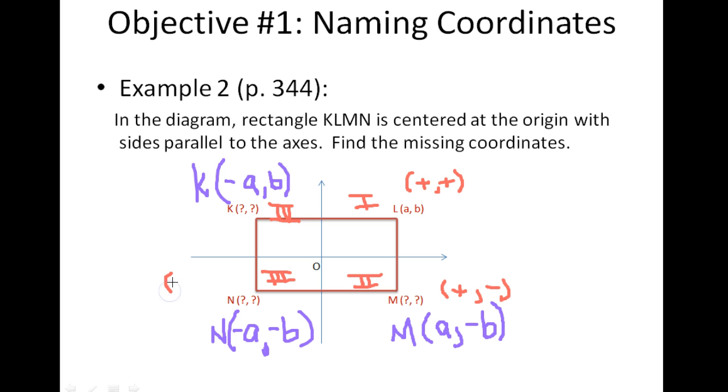Anything in quadrant 3 is going to be a negative x-coordinate with a negative y-coordinate because it lies on the left-hand side of the origin as well as on the bottom. So both coordinates are going to be negative. And for quadrant 4, any point that lies in quadrant 4 is going to have a positive x because it's above the origin, but a negative y because it's on the left of the origin or the y-axis.